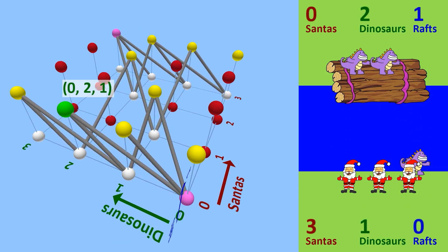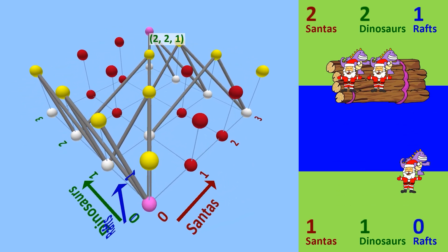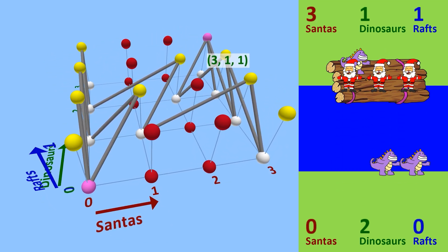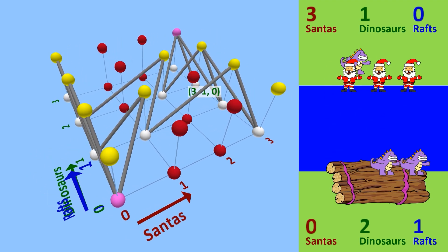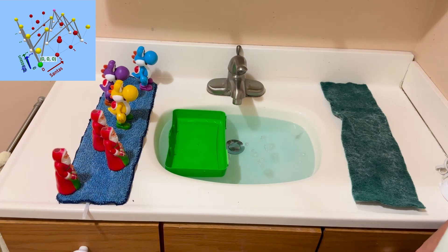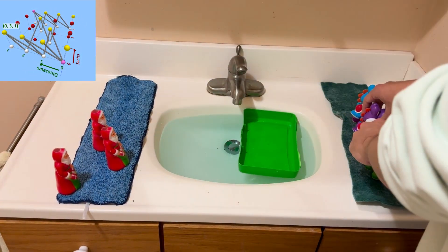Here it is. Two dinos cross, one dino returns. Two dinos cross, one dino returns. Two Santas cross, one dino and one Santa return. Two Santas cross, one dino returns. Two dinos cross, one dino returns. And finally, two dinos cross. And there we go. That's one way to get all three Santas and all three dinosaurs to the other side of the river.